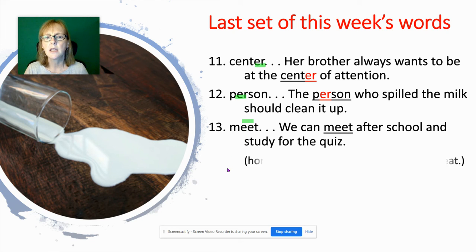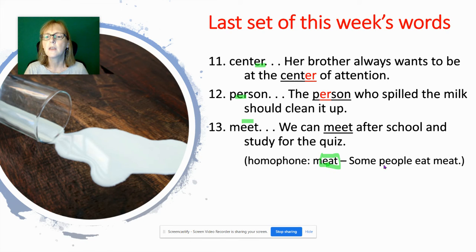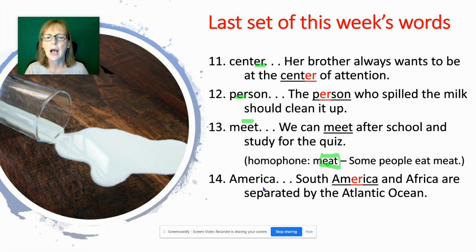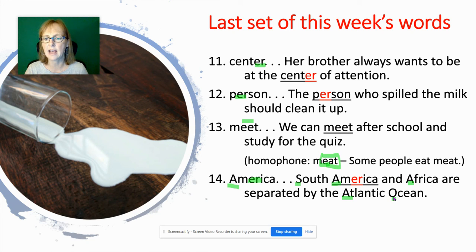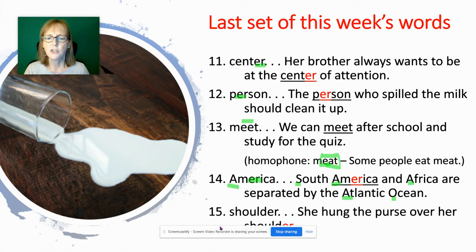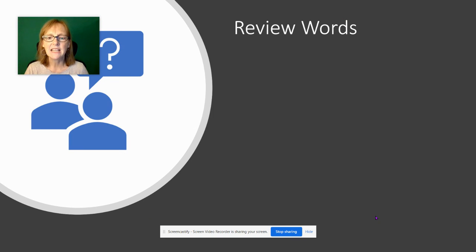'Person' — 'The person who spilled the milk should clean it up' — E-R spelling. 'Meet' — 'We can meet after school and study for the quiz' — spelled with two E's for the long E sound. Its homophone 'meat' is spelled E-A; a way to remember: put an M in front of 'eat' and you get 'meat'. 'America' — note the capital A; 'South America' gets both S and A capitalized. And 'shoulder' — 'She hung the purse over her shoulder' — common E-R ending.